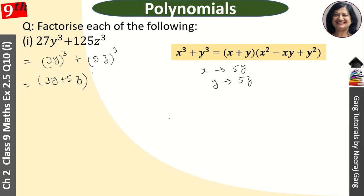And in the other bracket, we have 3y² minus 3y times 5z plus 5z whole square.